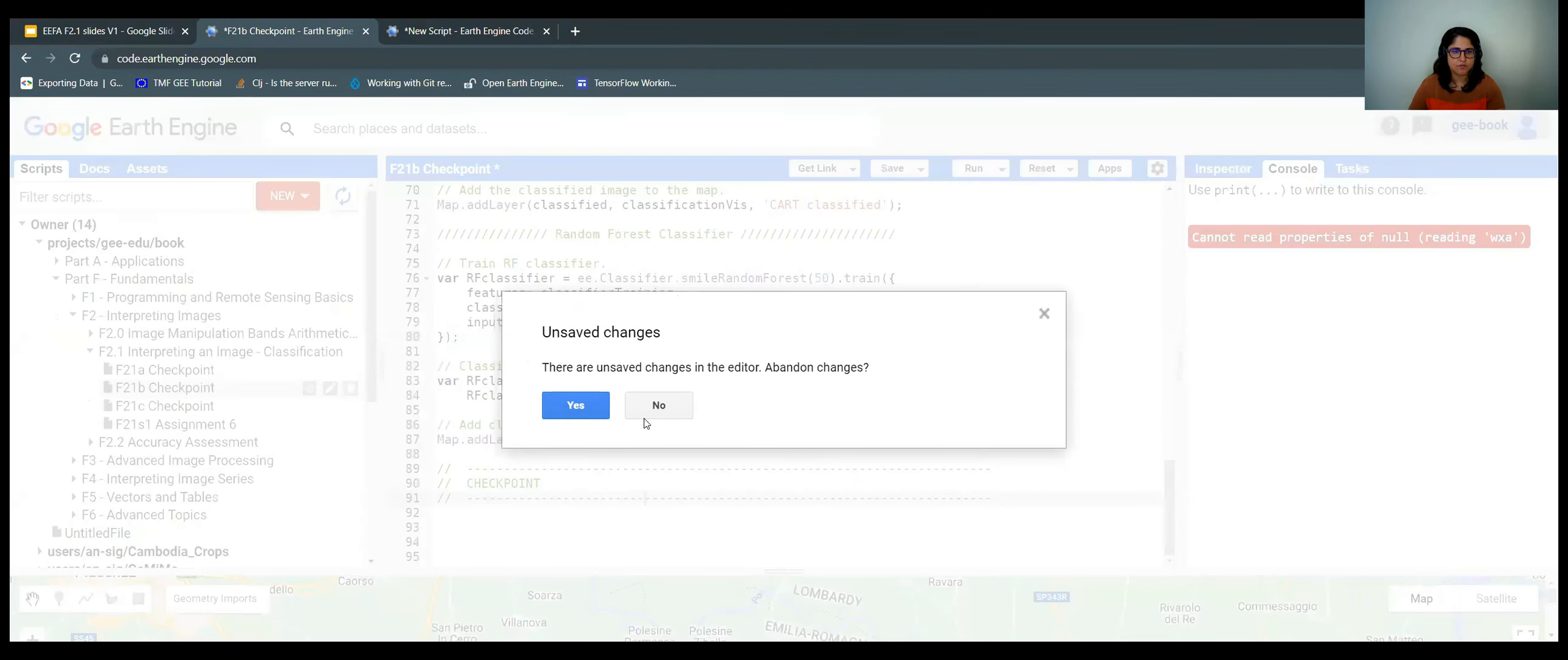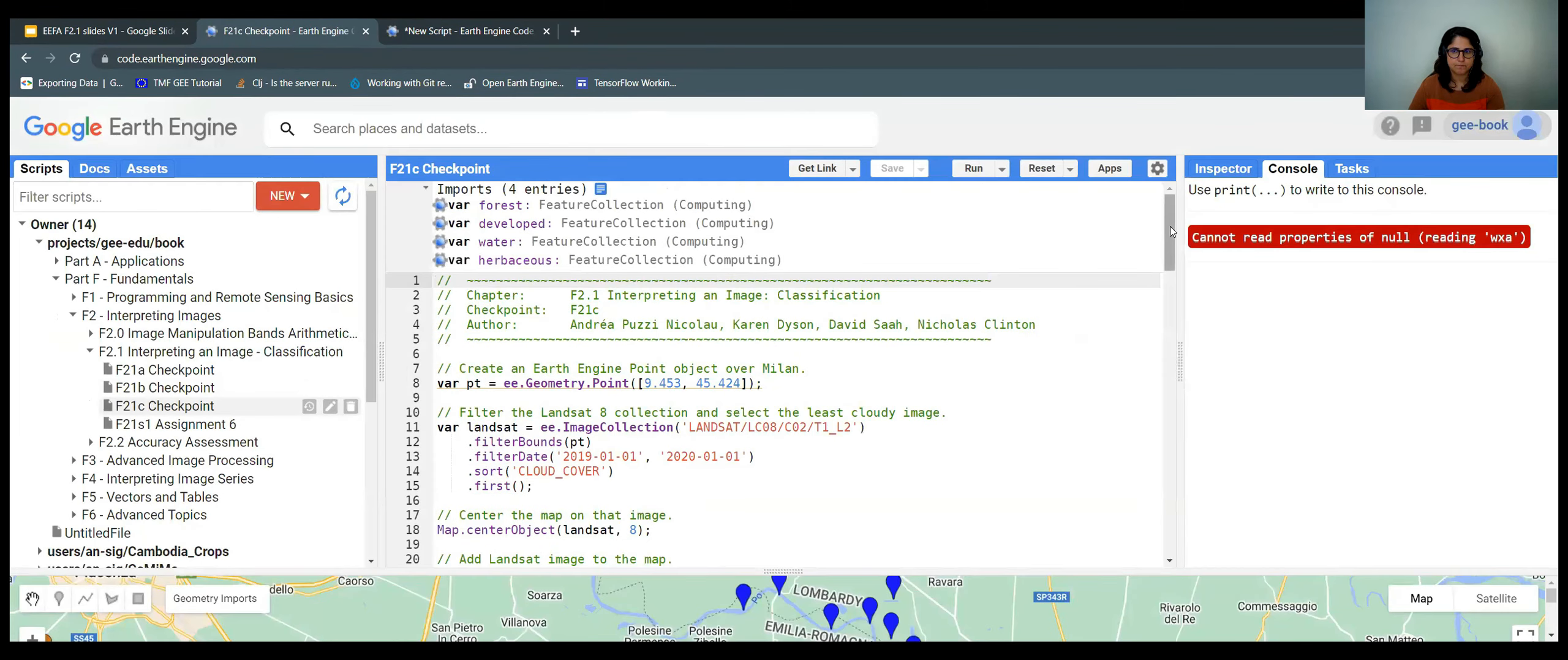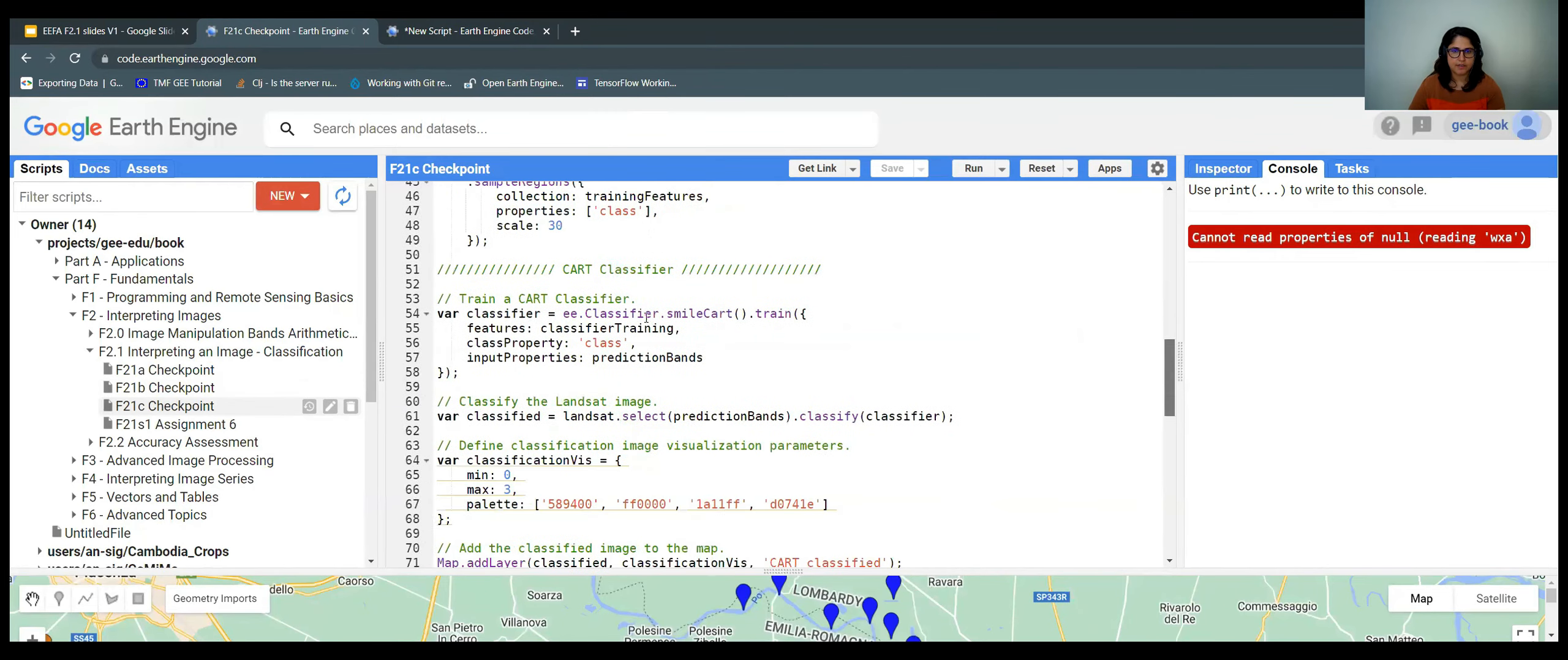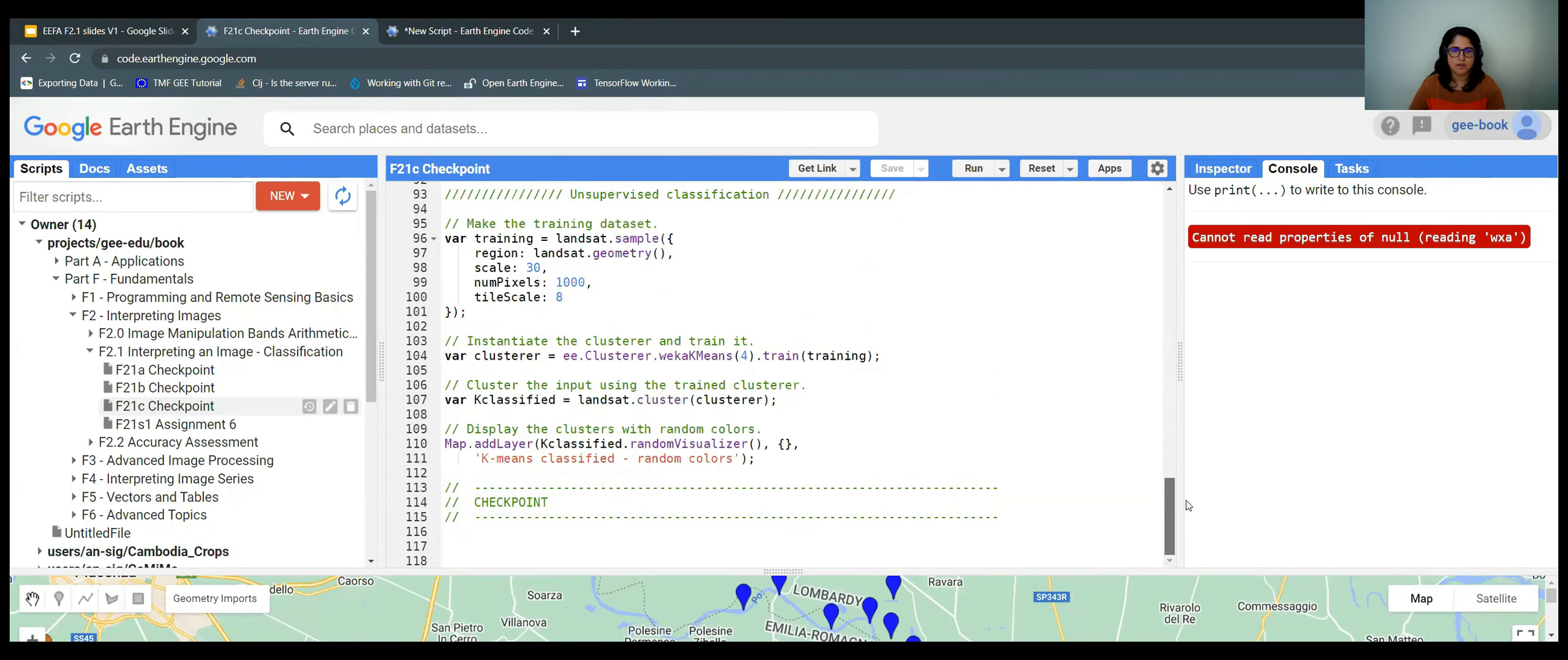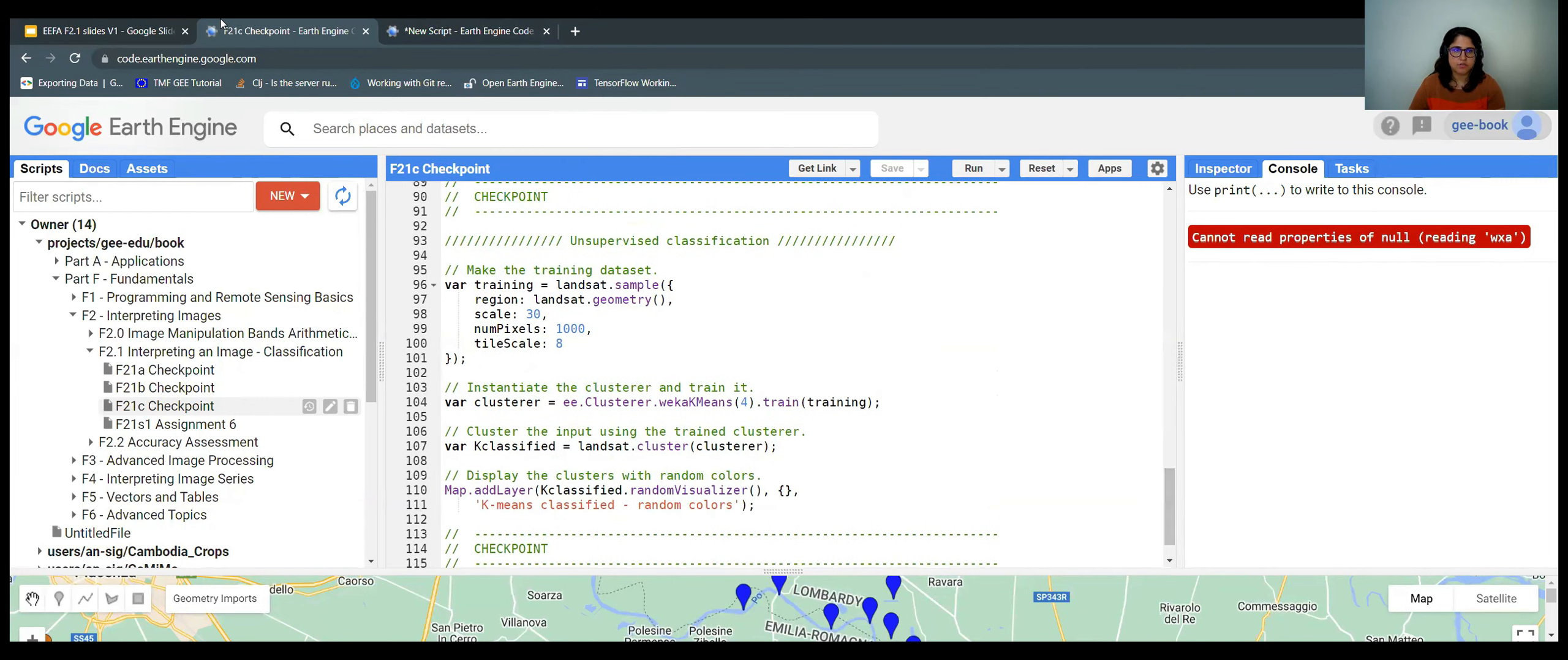I'll click here F21C. And yes, I'll abandon changes. So now we can scroll down. We have all the other classifications as well in this script. And instead of working here, because this is the last section, I'll just use the checkpoint.